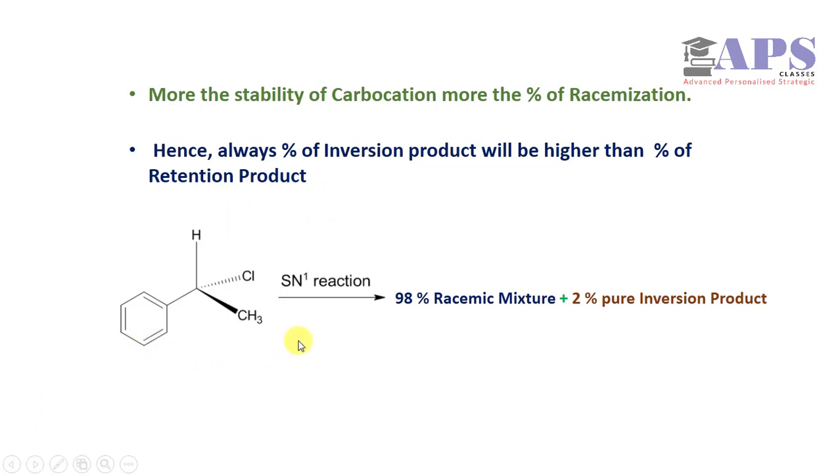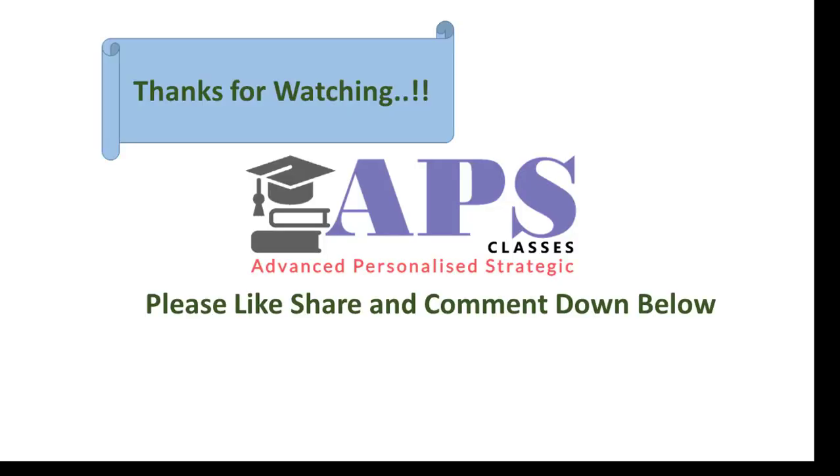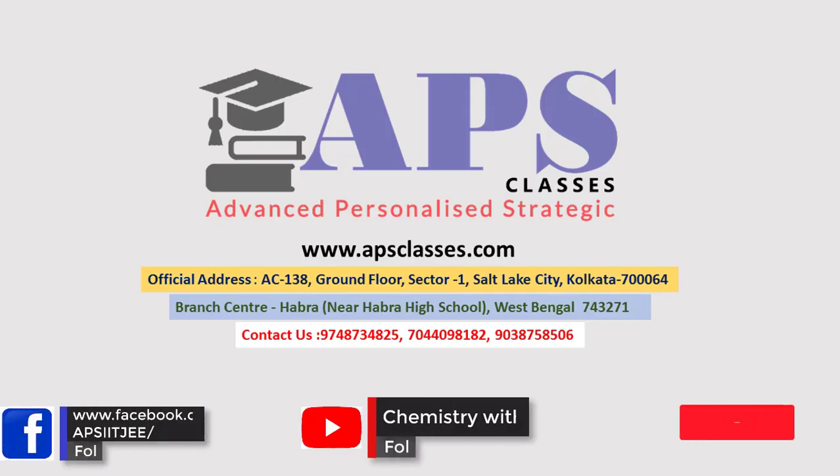If we take this reaction as an example, 98% will be a racemic mixture and 2% is the inversion product concentration.